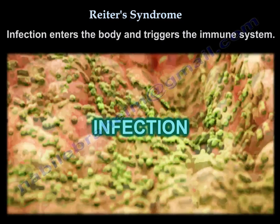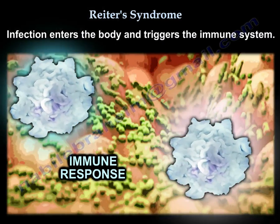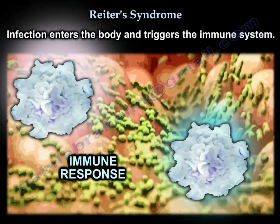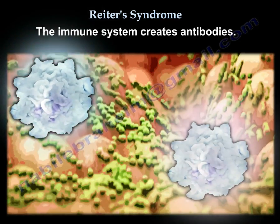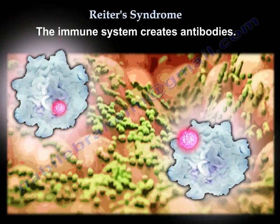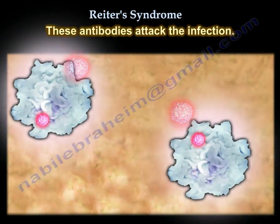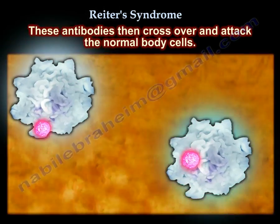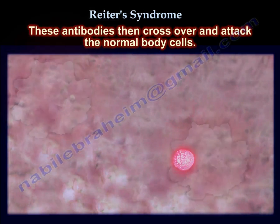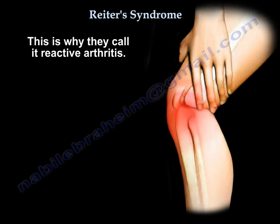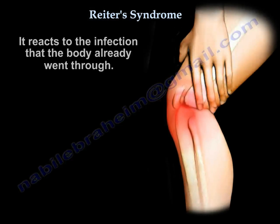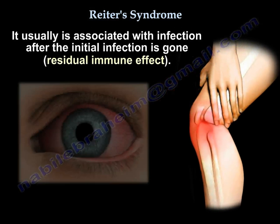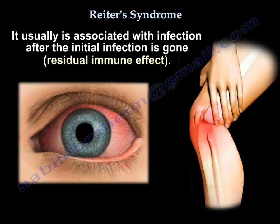How does this happen? The infection enters the body and triggers the immune system, which creates antibodies. These antibodies attack the infection, but then cross over and attack normal body cells. That's why it is called reactive arthritis — it reacts to an infection the body already went through, and this is called the residual immune effect.